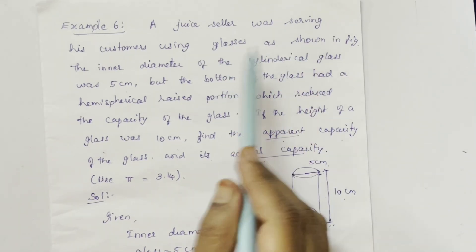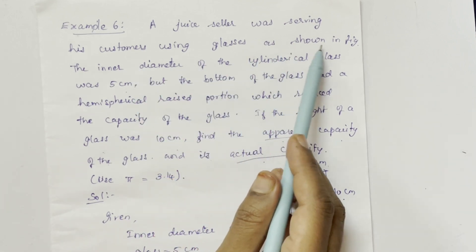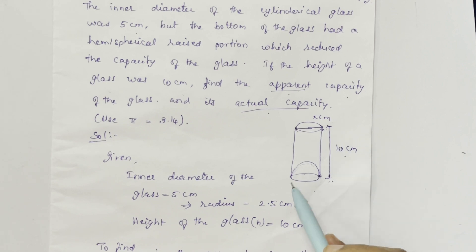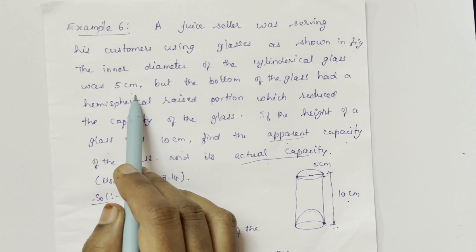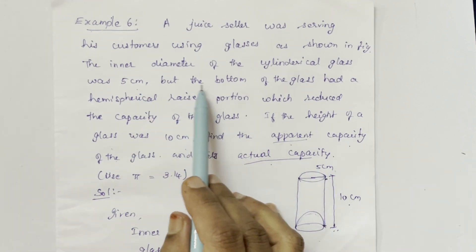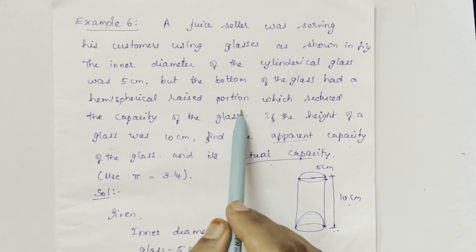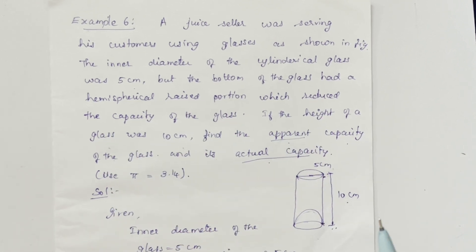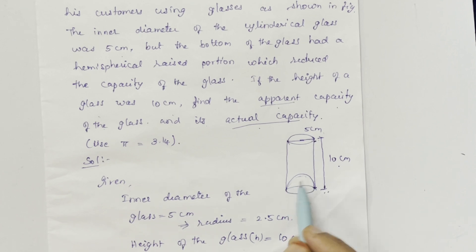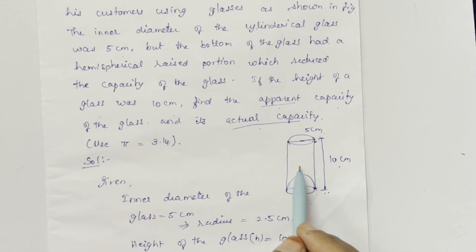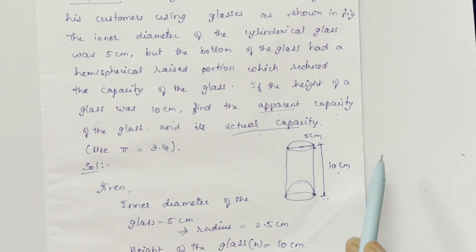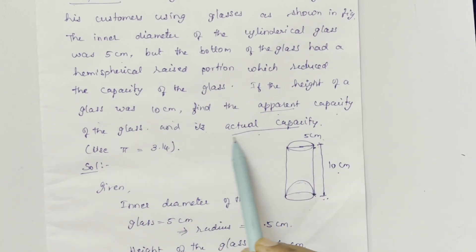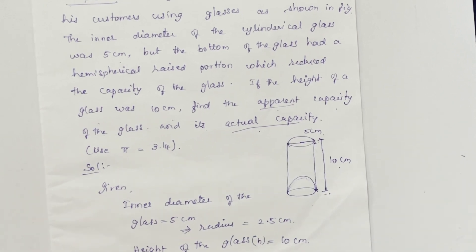A juice seller was serving his customers using glasses as shown in the figure. The inner diameter of the cylindrical glass was 5 cm. The bottom of the glass had a hemispherical raised portion, which reduced the capacity of the glass. The height of the glass was 10 cm. Find the apparent capacity of the glass and its actual capacity. Use π equal to 3.14.